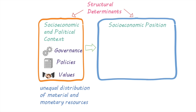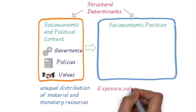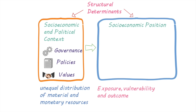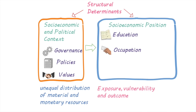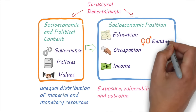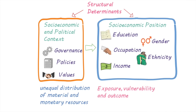The socio-economic position describes a person's place in society, which can affect their exposure, vulnerability, and outcomes to conditions that have an impact on their health. It is determined by a number of factors such as education, occupation, income, gender, race or ethnicity, and social class.